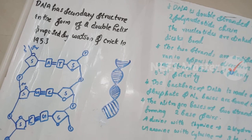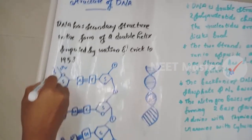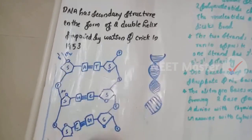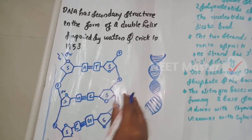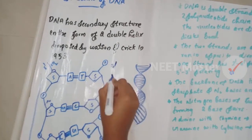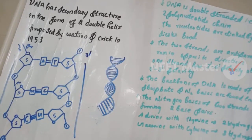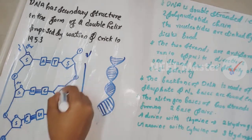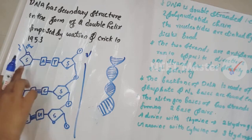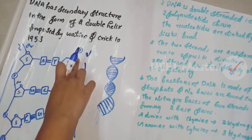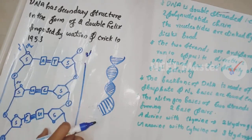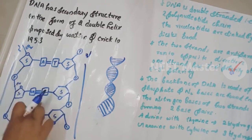One strand runs in the 5' to 3' direction, and the other runs in the 3' to 5' direction — these two strands are anti-parallel. The backbone of DNA consists of sugar and phosphate groups, with the bases paired in the middle portion.